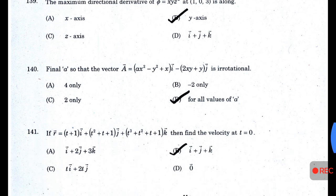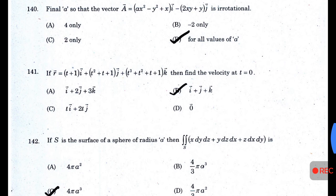The maximum directional derivative of φ = xyz² at point (1,0,3) is along the Y-axis. Find A so that the vector Ā = (Ax² − y² + x)î − (2xy + y)ĵ is irrotational — answer D: for all values of A. The answer to the next question is î + ĵ + k̂.